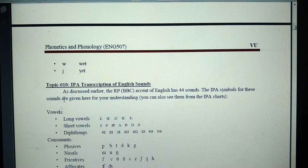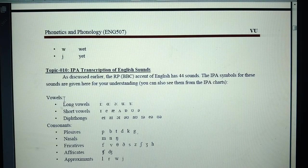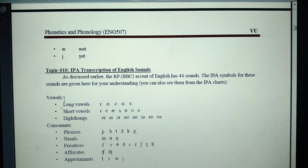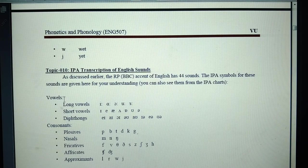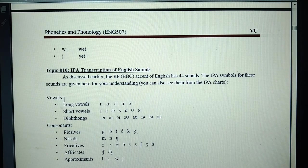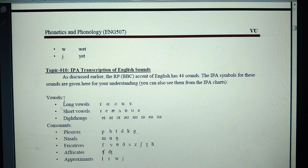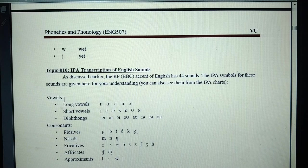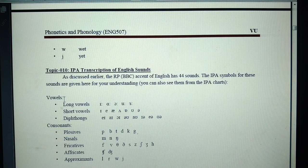Transcription of English sounds. As discussed earlier, the RP/BBC accent of English has 44 sounds. The IPA symbols for these sounds are given here. You can also see them from IPA International Phonetics Alphabet charts.